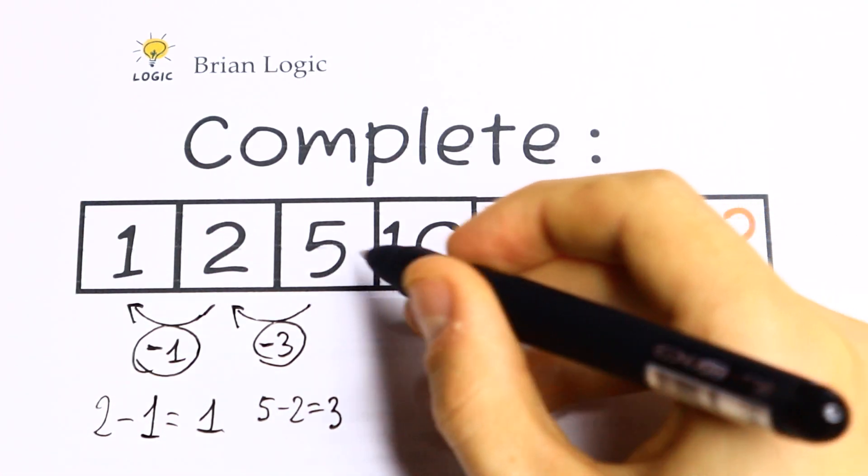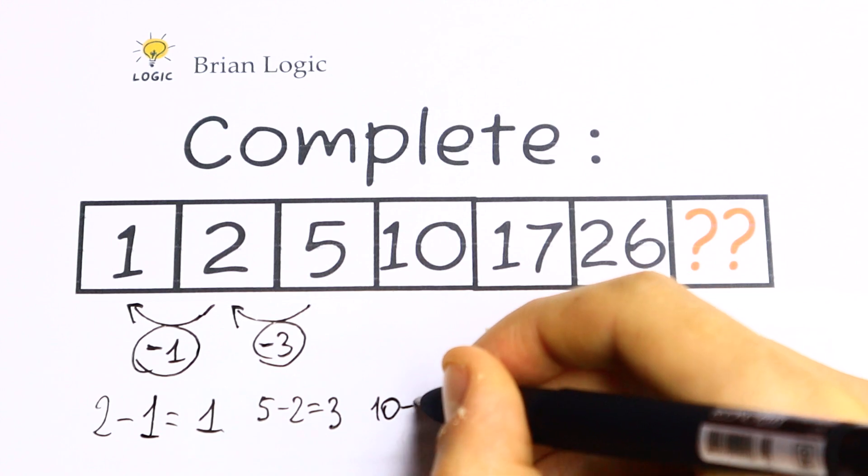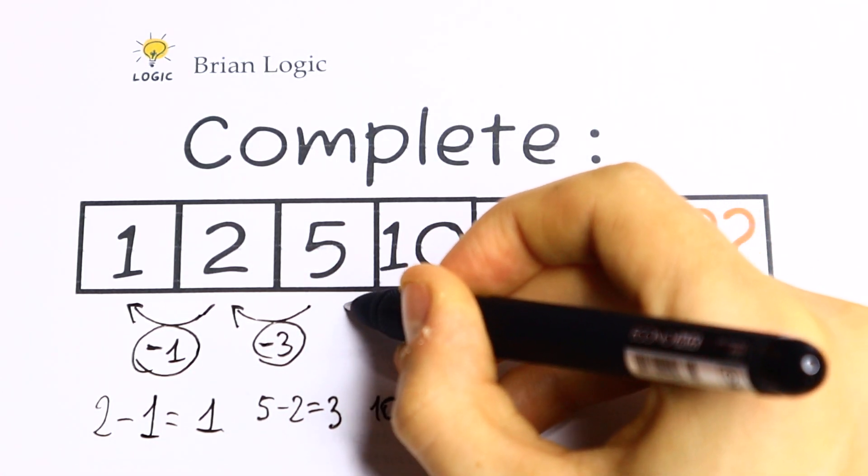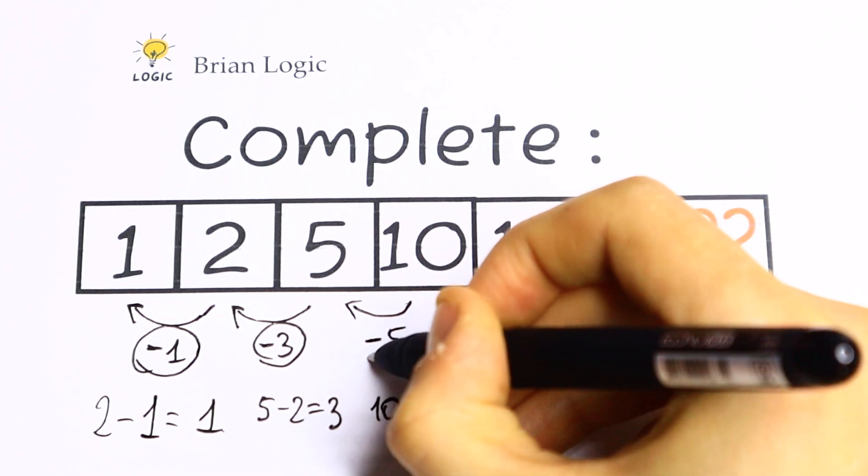So what we are going to do next. 10 minus 5, I write once more, 10 minus 5 equal to 5. So we need to subtract 5 from this 10.